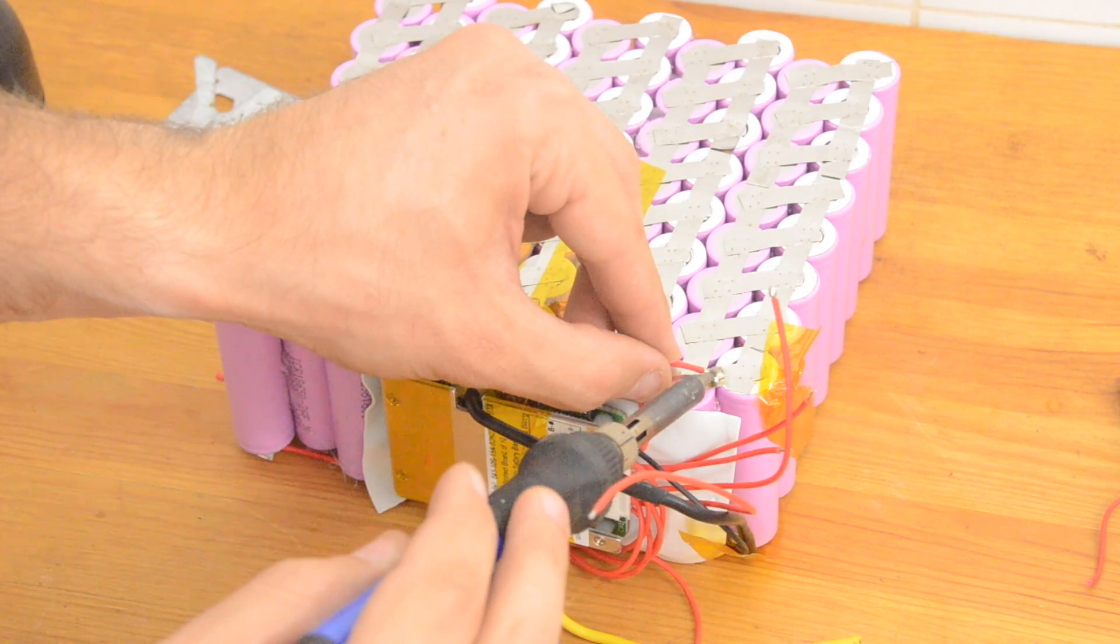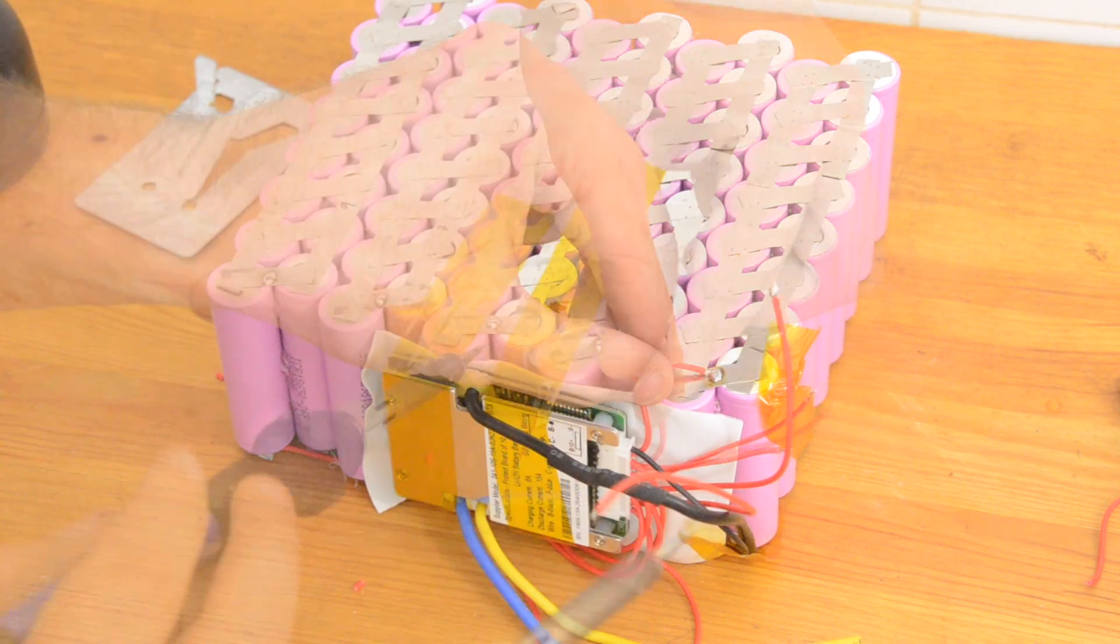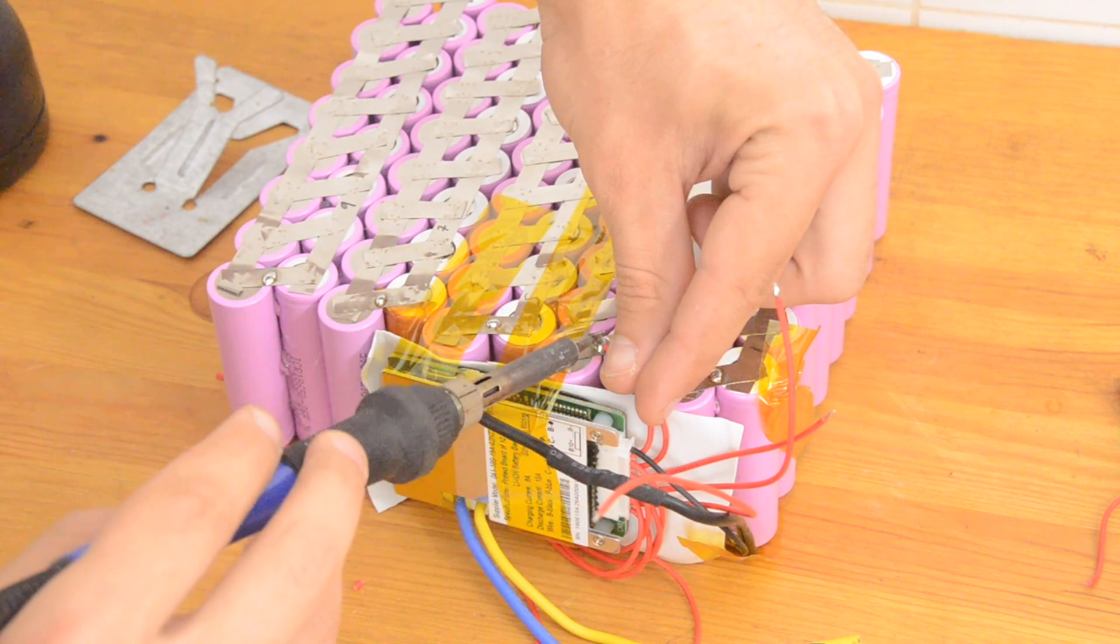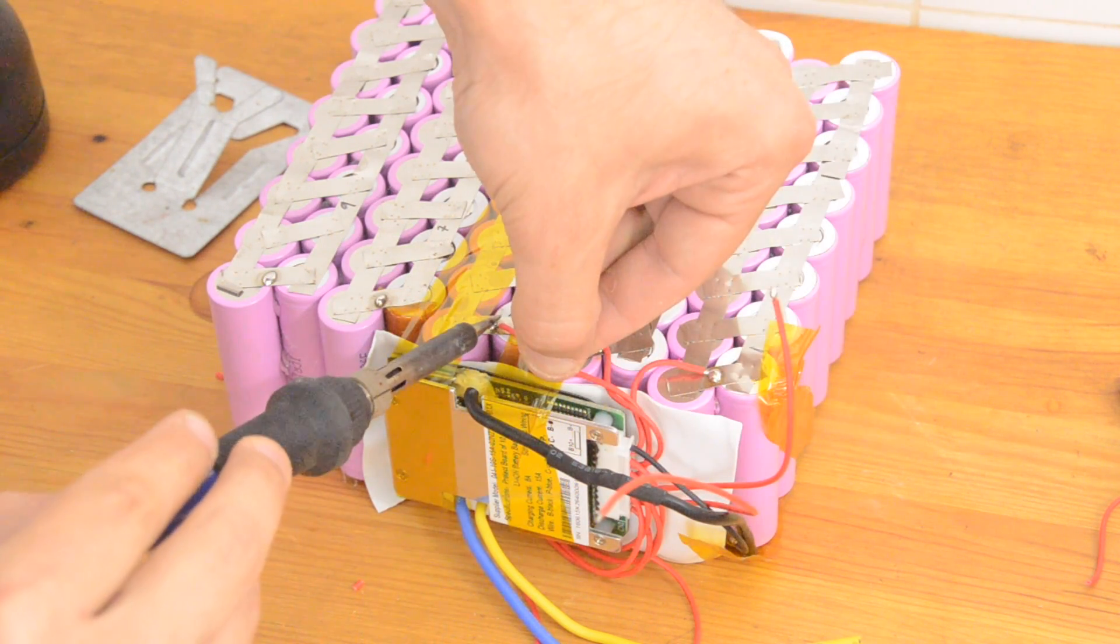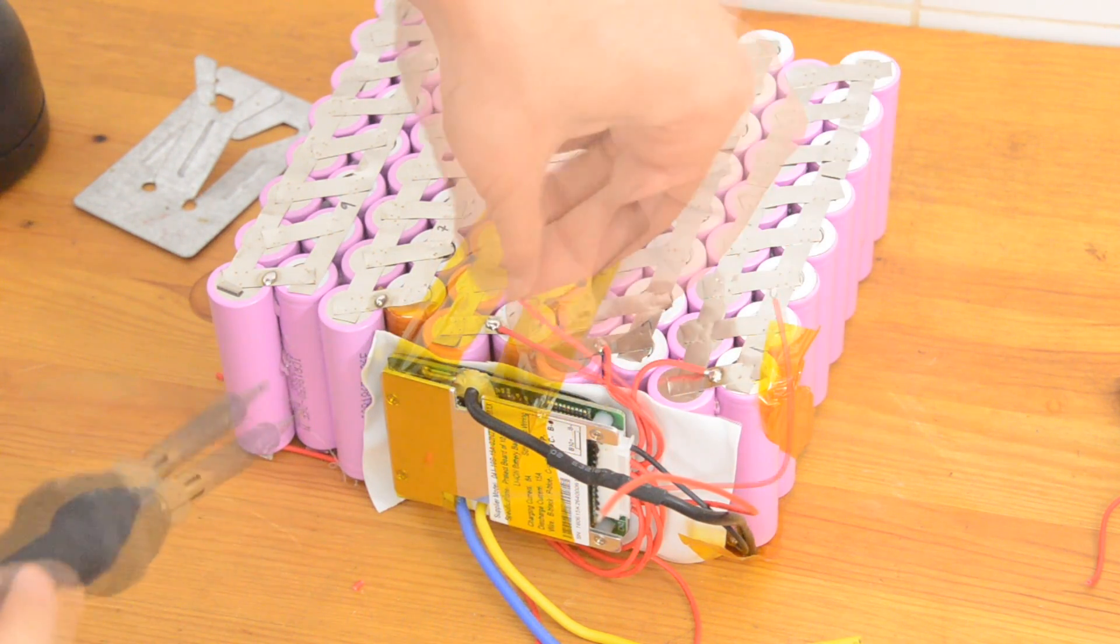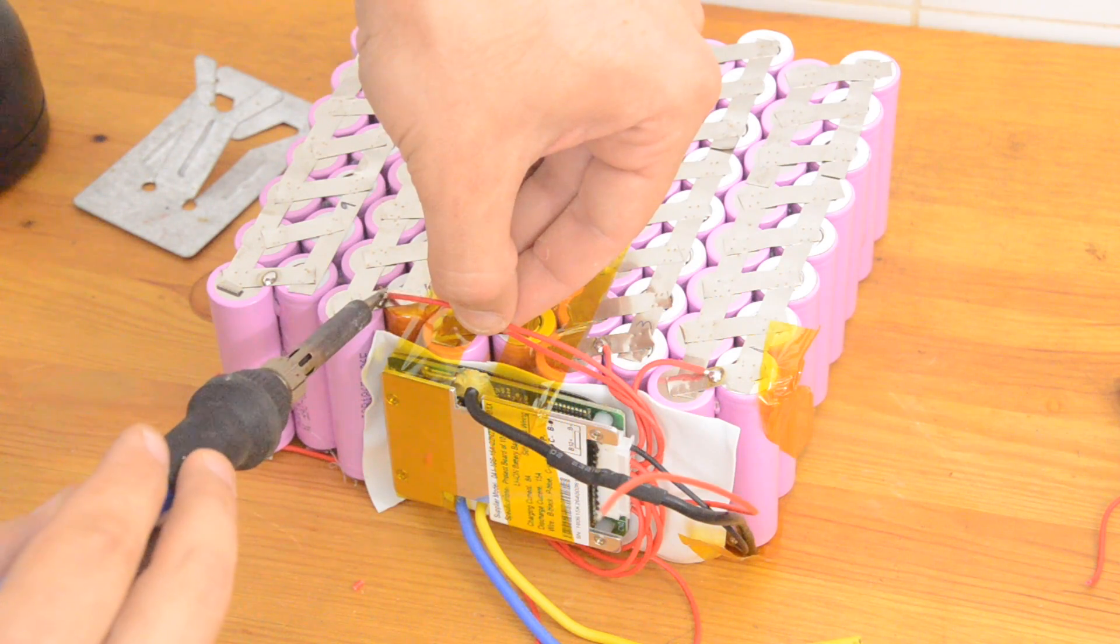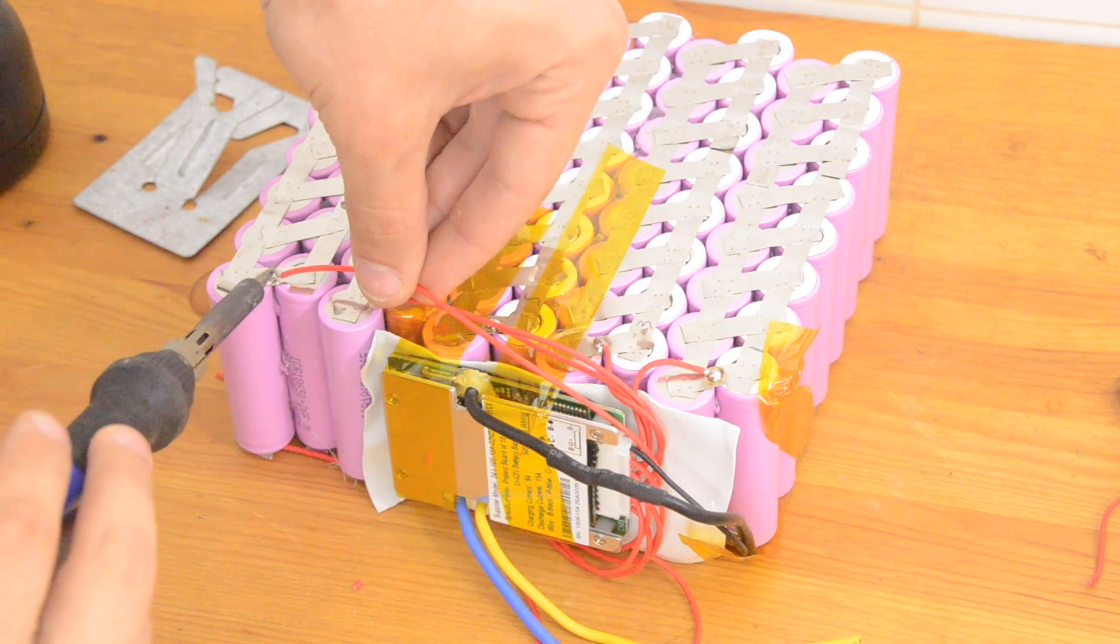And now on this side of the battery, I can solder on the BMS balance wires for positive 1, positive 3, positive 5, positive 7, and then lastly positive 9.